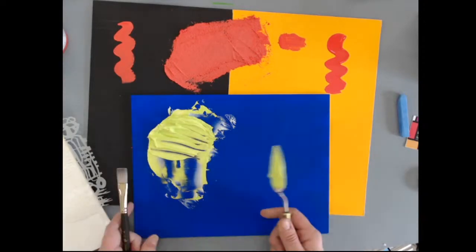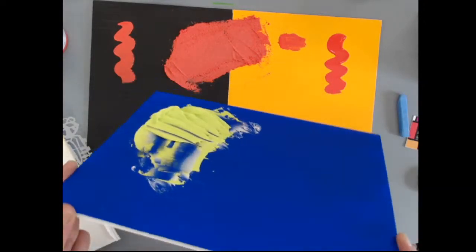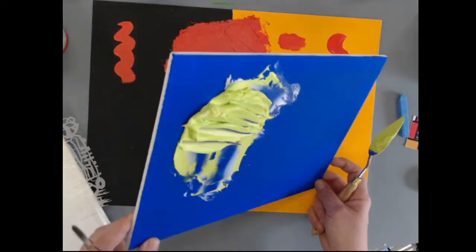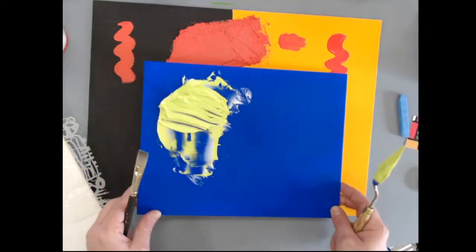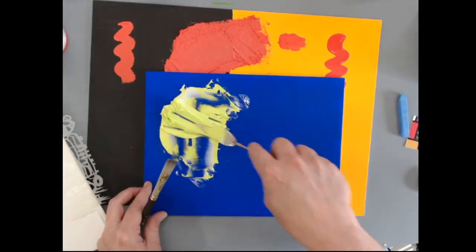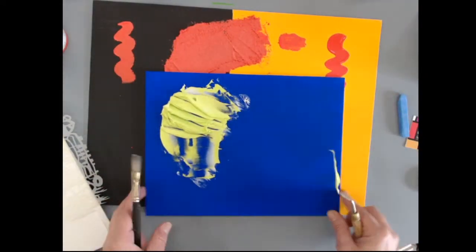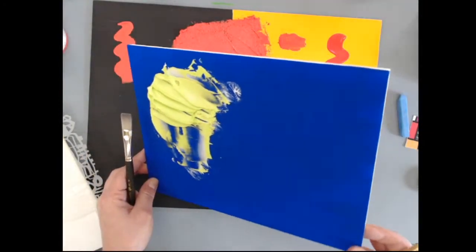There we go. Look how, look how tall I can get those peaks. Like I can really build texture with this. Really. And it's going to dry matte. So I can get this really built up. That's what this is for. And we can really get those textures going. Quite beautiful.